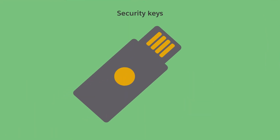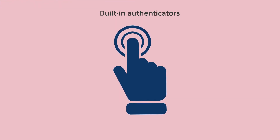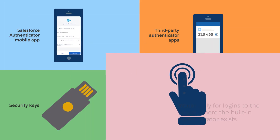Security keys are small, physical devices that are easy to use because there's nothing to install and no codes to enter. This is a great option for users who don't have mobile devices or can't bring cell phones onto the premises. A device's built-in authenticator service lets users verify themselves with a fingerprint, iris, or facial recognition scan — another great option when mobile devices aren't available.